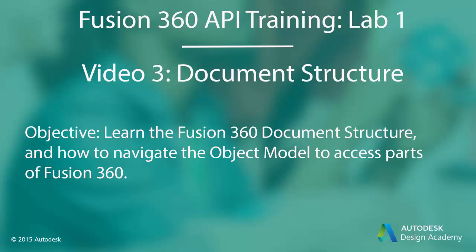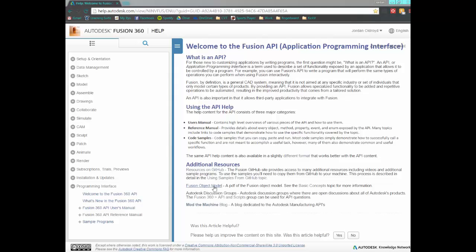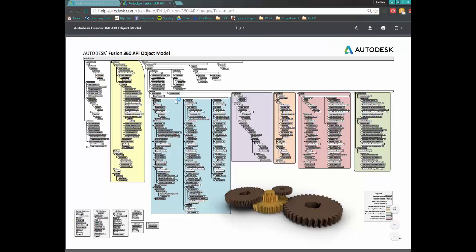In this video, we're going to discuss the Fusion 360 API document structure, as well as the lines of code that we're going to need to start off our scripts. So first, let's talk about the document structure. Let's open up the Fusion object model here — this is the document structure for the Fusion 360 API.